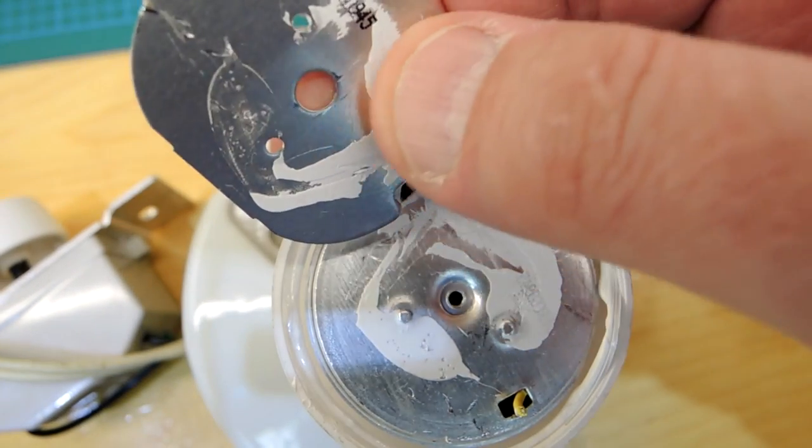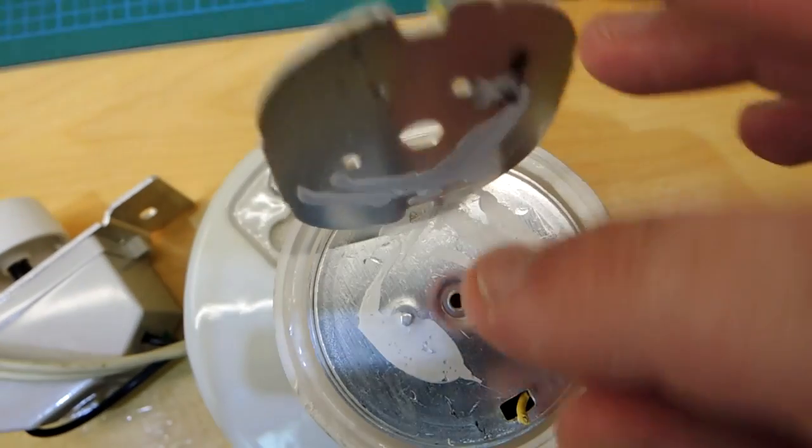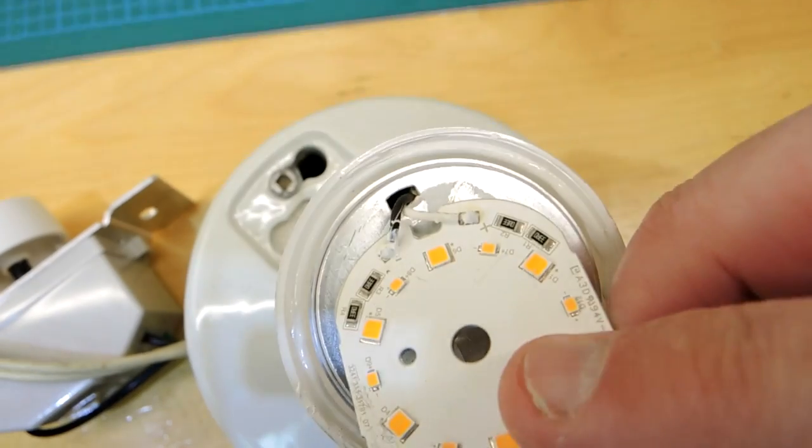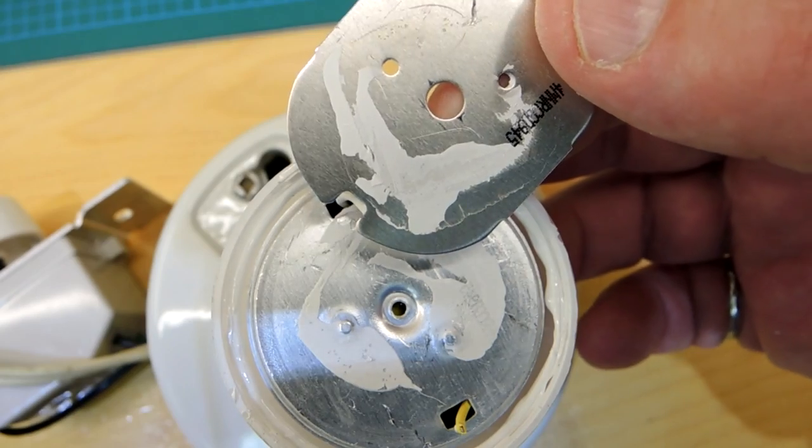This is of course a thermally conductive paste, but it looks like it's also an epoxy. So they actually just glued the emitter down onto this bit of metal. Until this date, I've only seen these screwed down. So here again is another innovation on Philips' part.